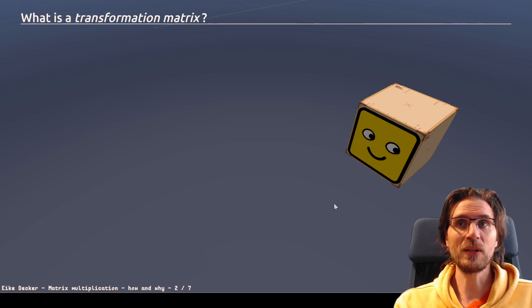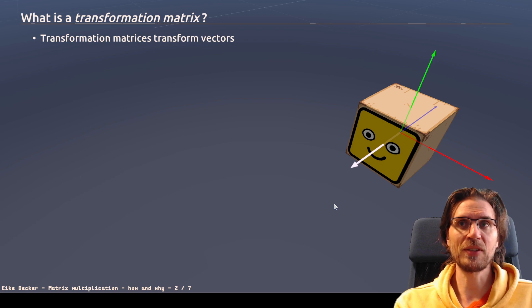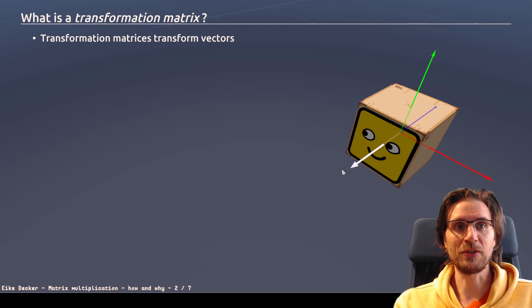So what is a transformation matrix? Well, we can do several things with it, and one thing we can do is to transform vectors. Like Mr. Boxy is showing here a forward vector, and it's also demonstrating how itself is being transformed.